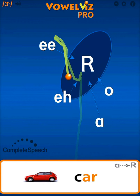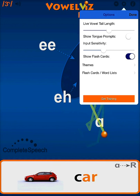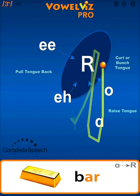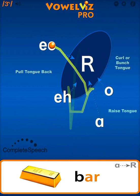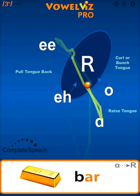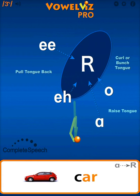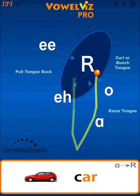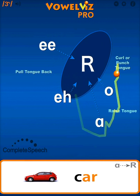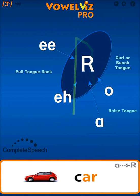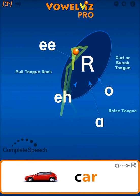VowelViz Pro also has a useful new tool called Tongue Prompts. When I open the options menu, I can toggle and turn on the Tongue Prompts option. Tongue Prompts are simple instructions that help you and your client understand what changes need to be made to tongue position to produce a clear R sound. For example, if I say the word car, I can see that the tracking ball travels from AH to ER. However, if I say call, I can see that the tracking ball is going towards the curl or bunch tongue and raise tongue prompts. And I can see the difference between those articulations.